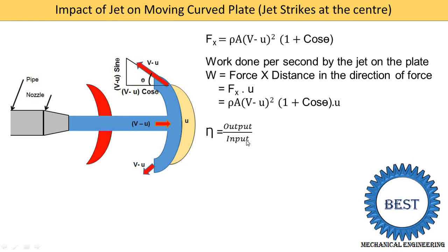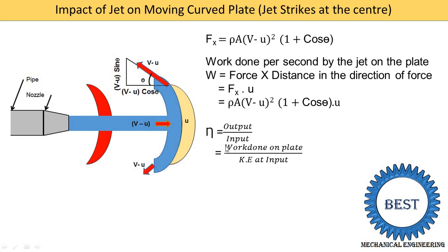Next we find the efficiency: output divided by input. The output is the work done on the plate, and the input is the kinetic energy coming out from the nozzle. So efficiency equals work done on the plate divided by kinetic energy at the input. We already have the equation for work done, and kinetic energy at input equals (1/2)mv².